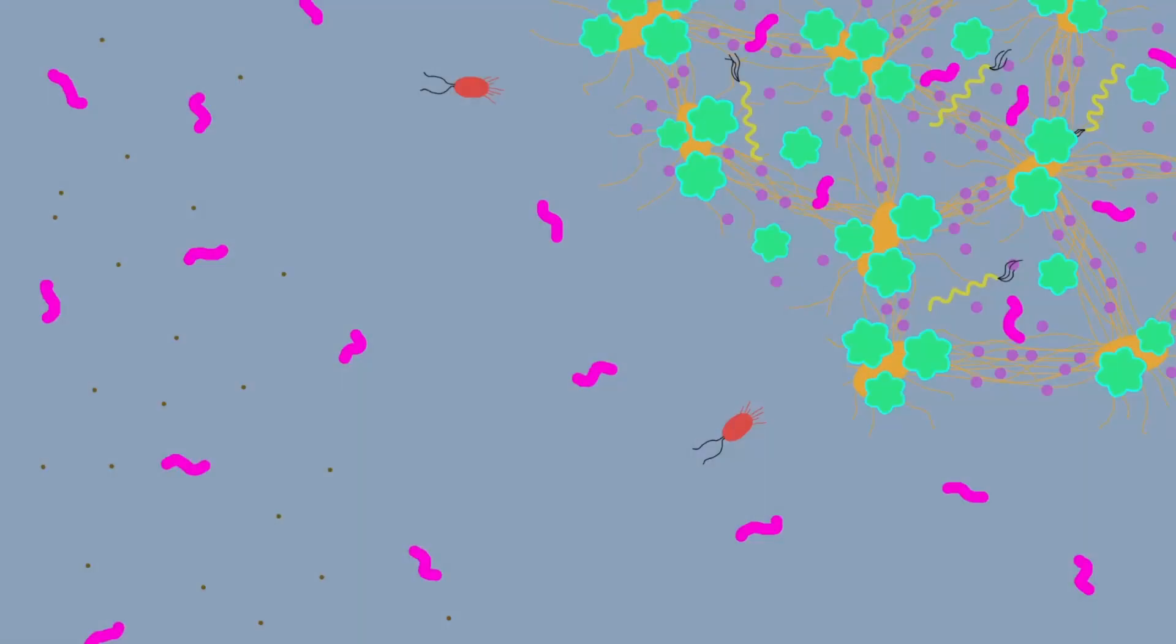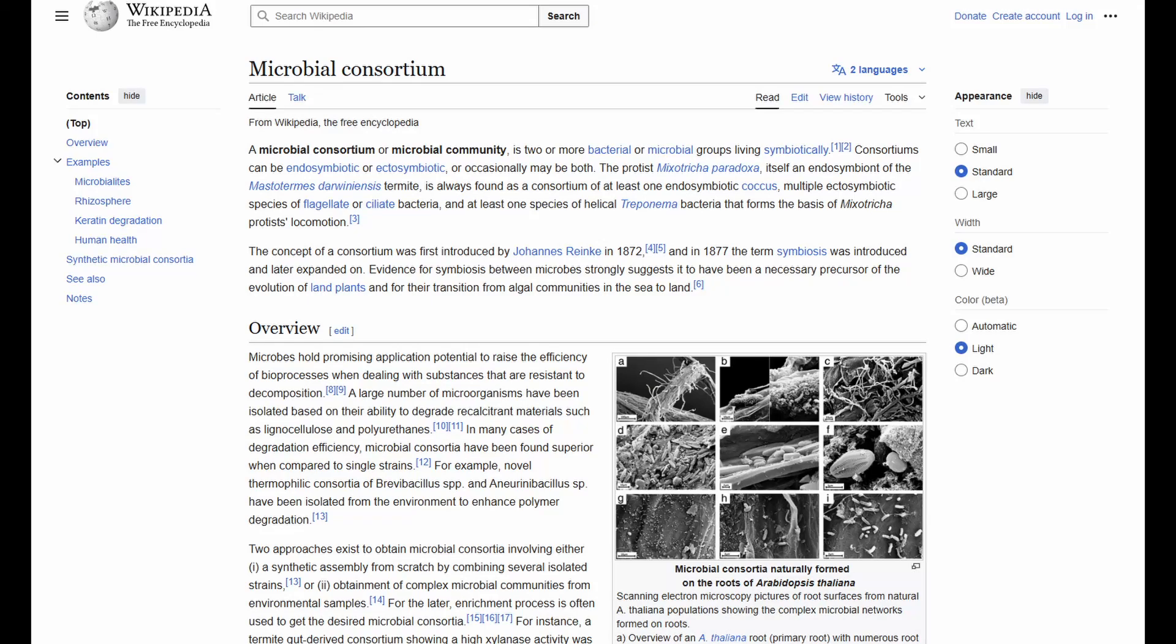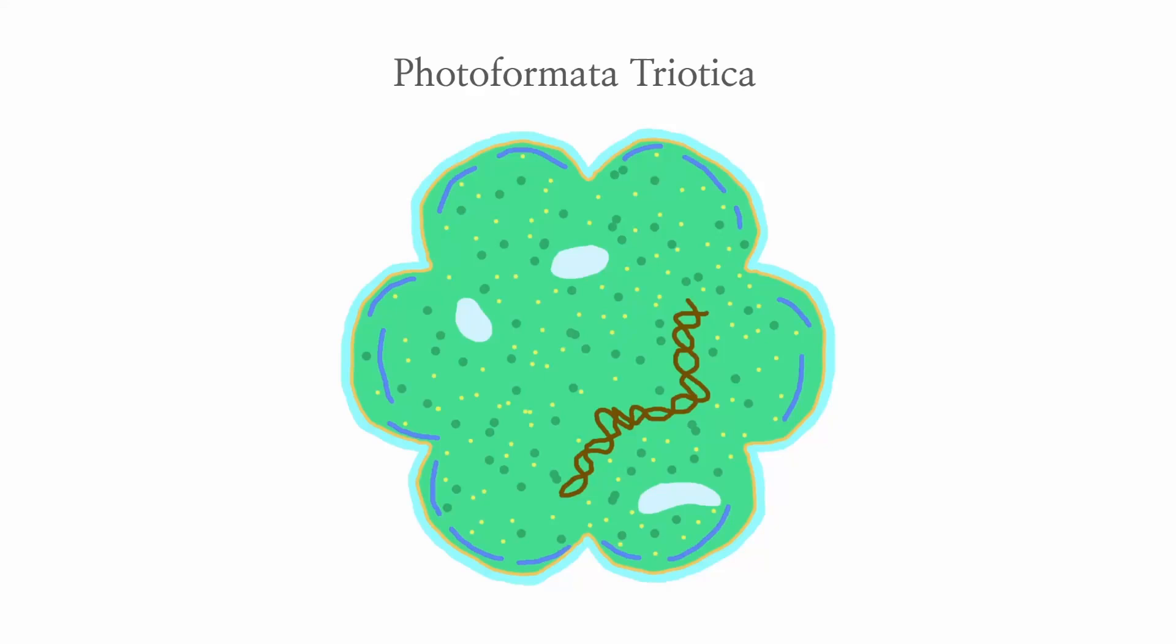This is a stylized representation of what you might see under a high-magnification microscope when looking into a sample of surface water. On the top right, you can see the edge of a tight-knit microbial community. A microbial community is a symbiotic or commensal collection of microbe species that live together and often rely on each other for metabolic support.